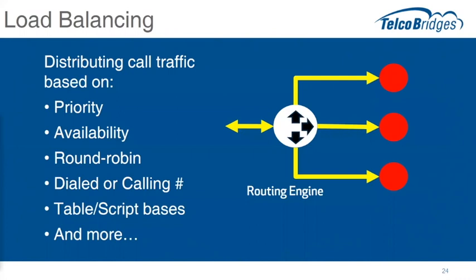It can get more complex — for example, any number dialed to India could go to one particular service provider, and if that provider is congested or unavailable, it sends the call to a second low-cost provider for India. Or in an application context, a certain access code routes all calls to a conferencing server, ensuring all users land on the same server for dial-in conferencing.